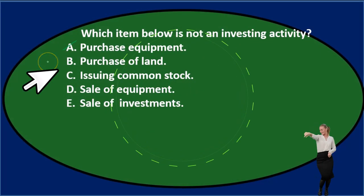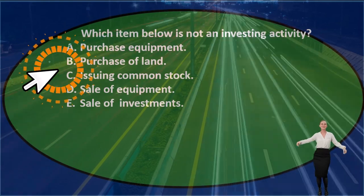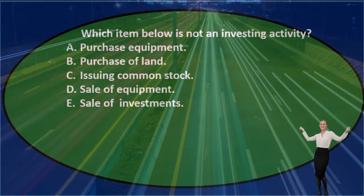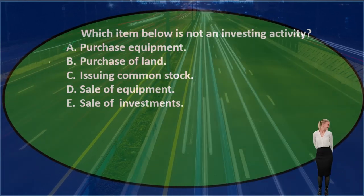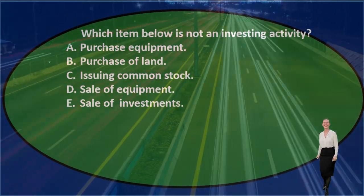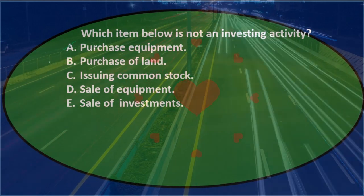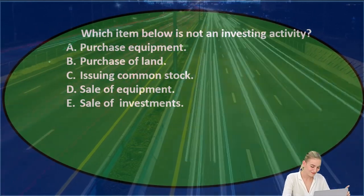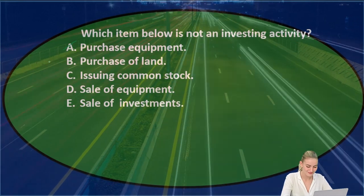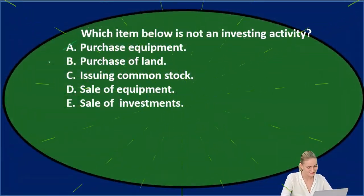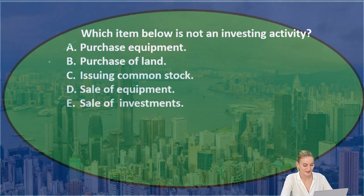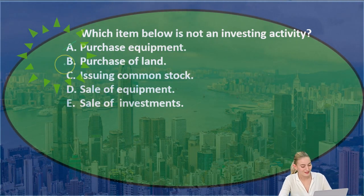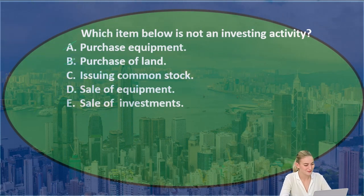B. Purchase of land — we can go through the same thought process. The journal entry would be debit land and credit cash or notes payable. None of those accounts are income statement accounts, so it's not operating. We purchased a long-term asset, so that looks like investing — not our answer either.